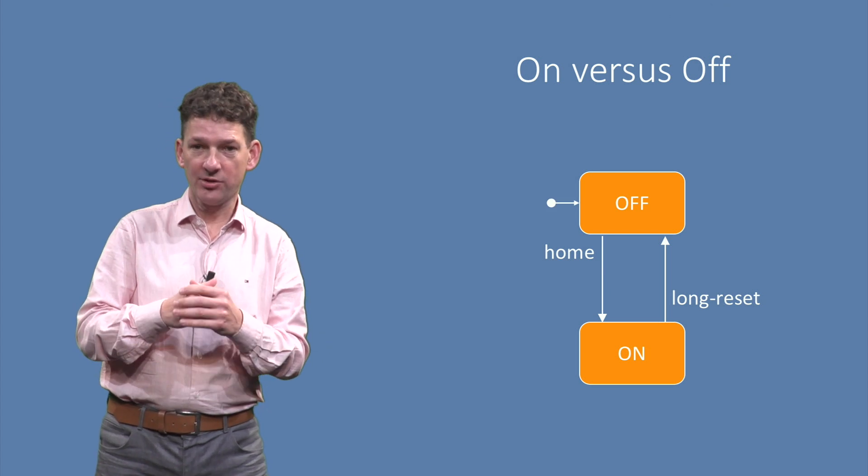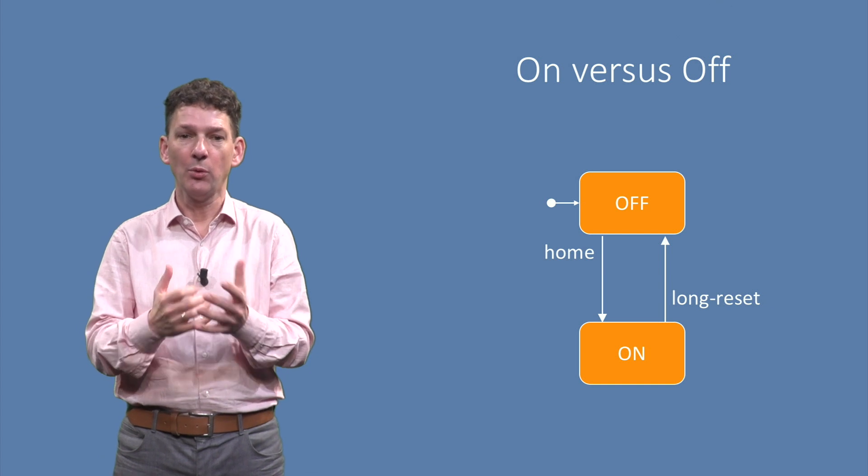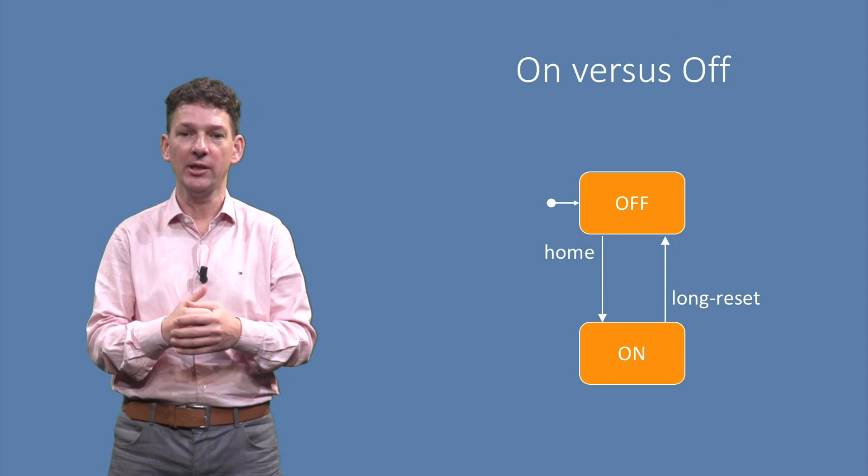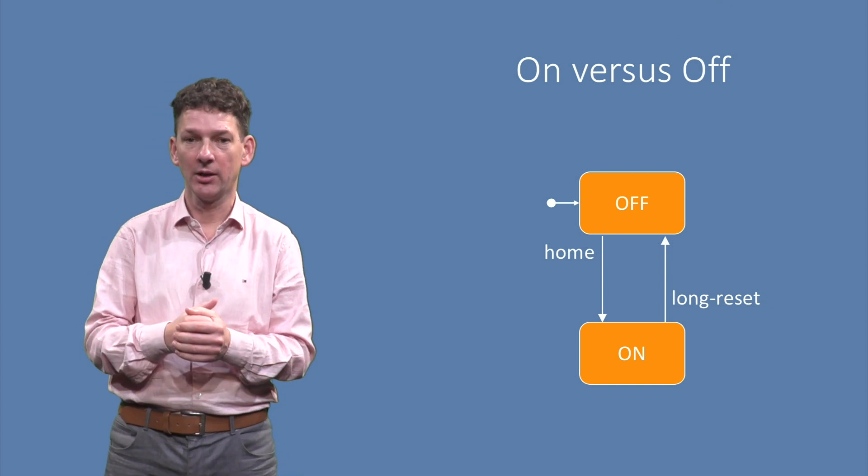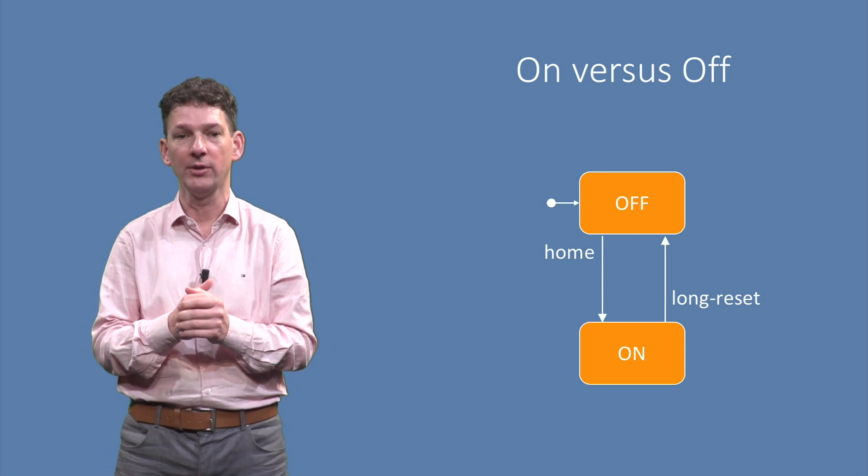With two states, we should decide which is the initial state. For the phone, we will assume that the phone initially is switched off. In the diagram, we indicate this with the little arrow into the off state, shown at the top left.